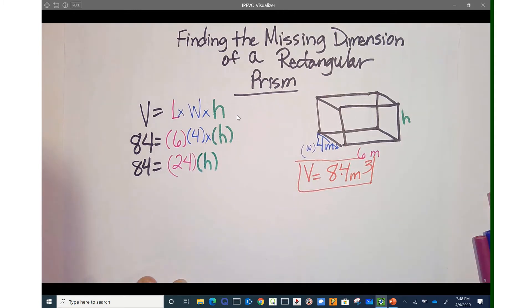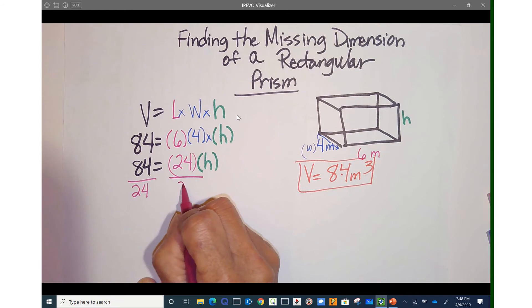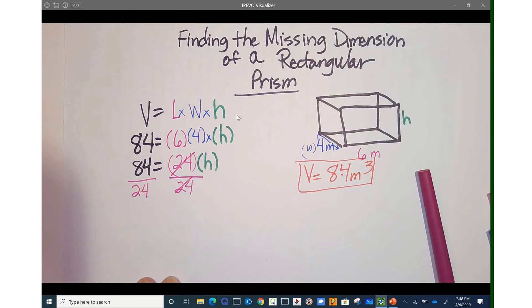So now it's the same as we've done before. We're going to divide 24 into each side. And we know that this cross cancels that. We bring this H down.